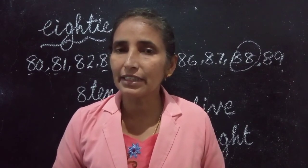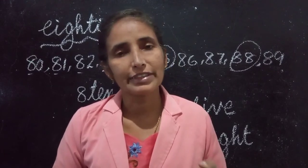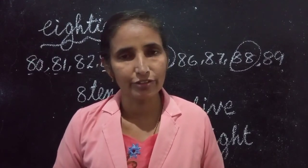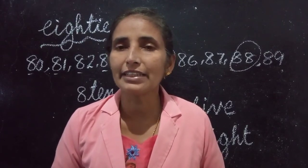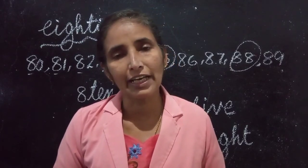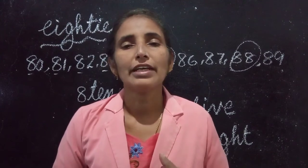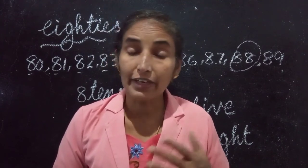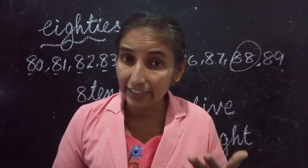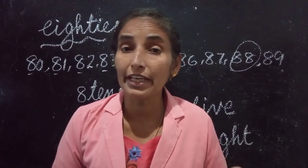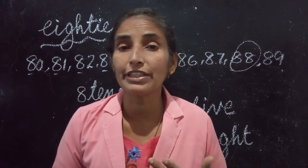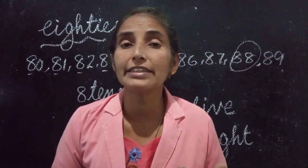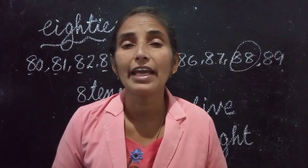Then learn the spellings of 70 and 80 also. If you learn the spelling of 70 and 80, you can write 71 to 79 and 81 to 89 also. So what is the spelling of 70? S-E-V-E-N-T-Y 70. And what is the spelling of 80? E-I-G-H-T-Y 80.